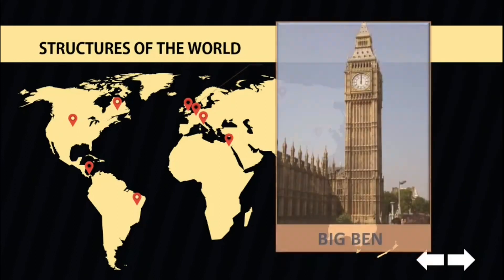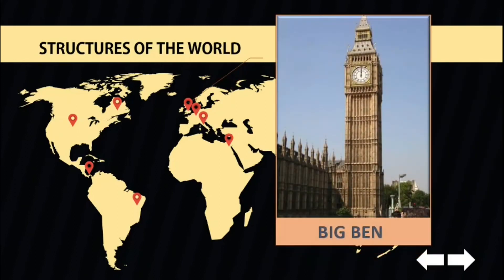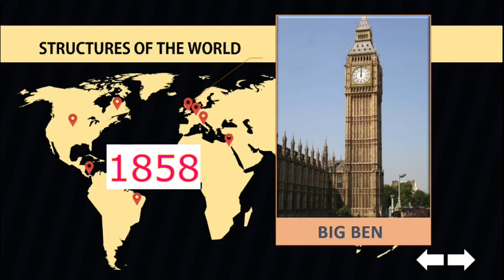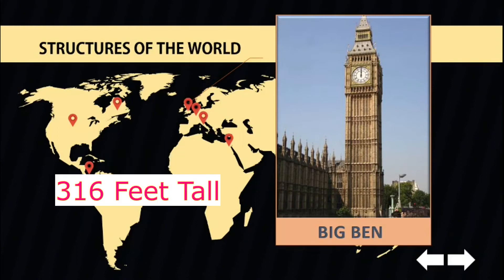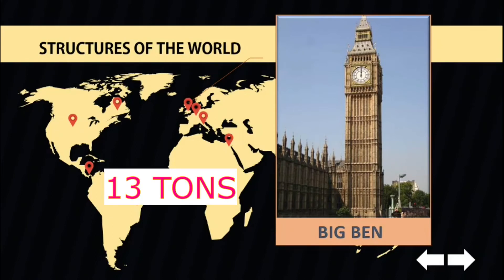The famous Tower Clock Big Ben was actually the name of one of the bells and not the clock itself. But as time went by, it has been named both for the tower clock and the bell. It was completed during the restoration of the Palace of Westminster in 1858. The tower stands 316 feet tall, the clock face is 23 feet square with 4-foot numbers, and the great bell is 7.5 feet tall and weighs 13 tons.